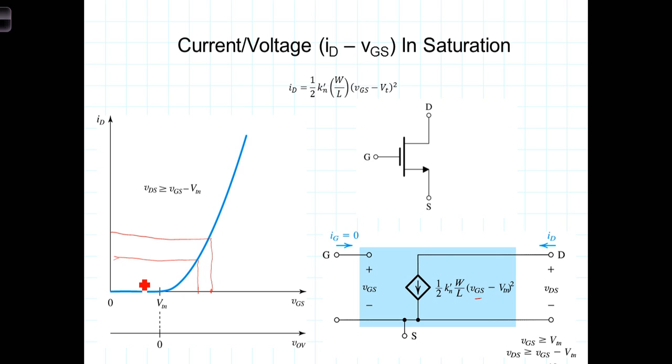But the astute observer will notice that this graph is not linear. In fact, it's a square law relationship, which would, if we were to allow it, introduce nonlinear distortion.